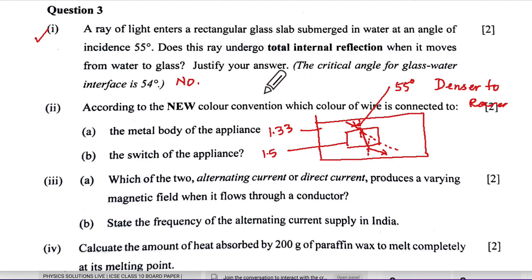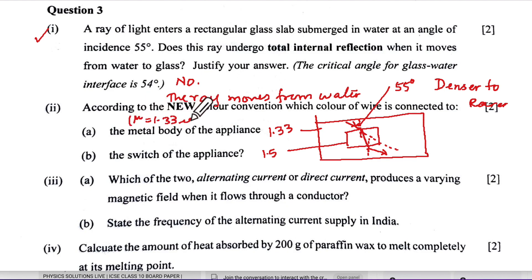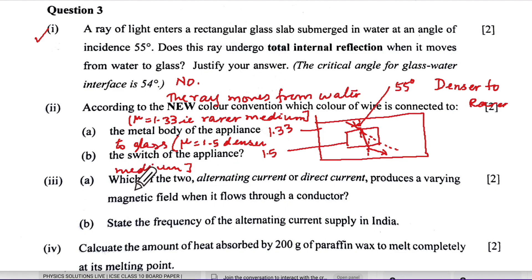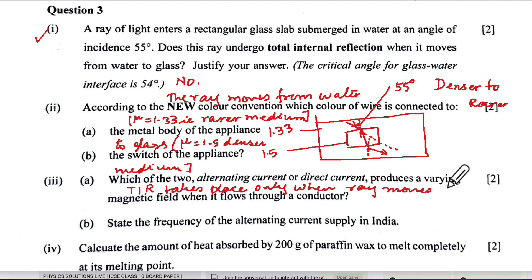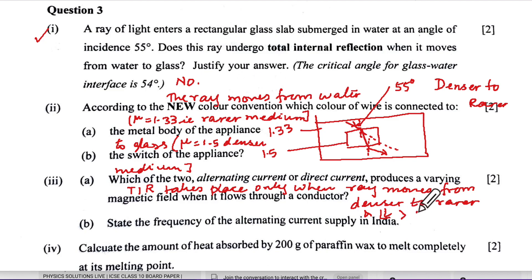The answer is no — the ray does not undergo total internal reflection. The reason: the ray moves from water (µ = 1.33, rarer medium) to glass (µ = 1.5, denser medium). Total internal reflection takes place only when the ray moves from denser to rarer medium AND the angle of incidence is greater than the critical angle. Although angle i = 55° > 54° (critical angle), the denser-to-rarer condition is not met.